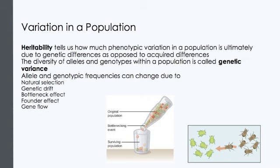Another source of evolutionary change separate from genetic drift is gene flow, where a population may gain or lose alleles when fertile individuals move into or out of the populations, or when gametes such as plant pollen are transferred between populations. Gene flow tends to reduce differences between populations. For example, because humans today move more freely about the world than in the past, gene flow has become an important agent of evolutionary change in previously isolated human populations.